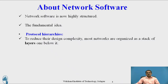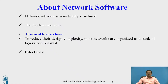To reduce design complexity, most networks are organized as a stack of layers, one below another. The user can pass the data from one layer to another layer, layer below layer, for hierarchy purposes. After transmitting the data from one layer to another layer, both layers — the present layer and the next layer — have to interface with each other. If the next layer is free, then only the current layer can pass the data. If the next layer is busy, then the current layer has to wait.